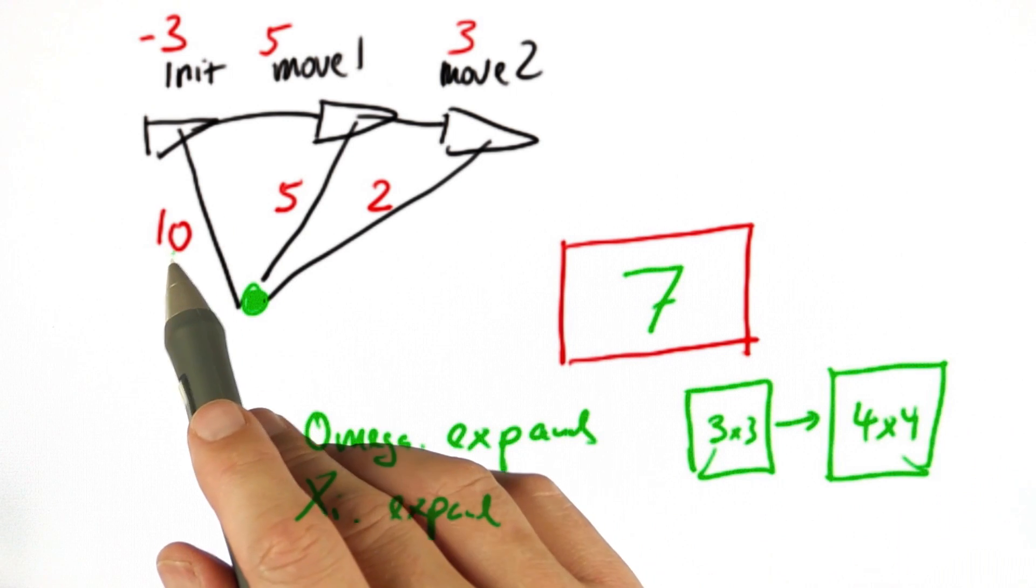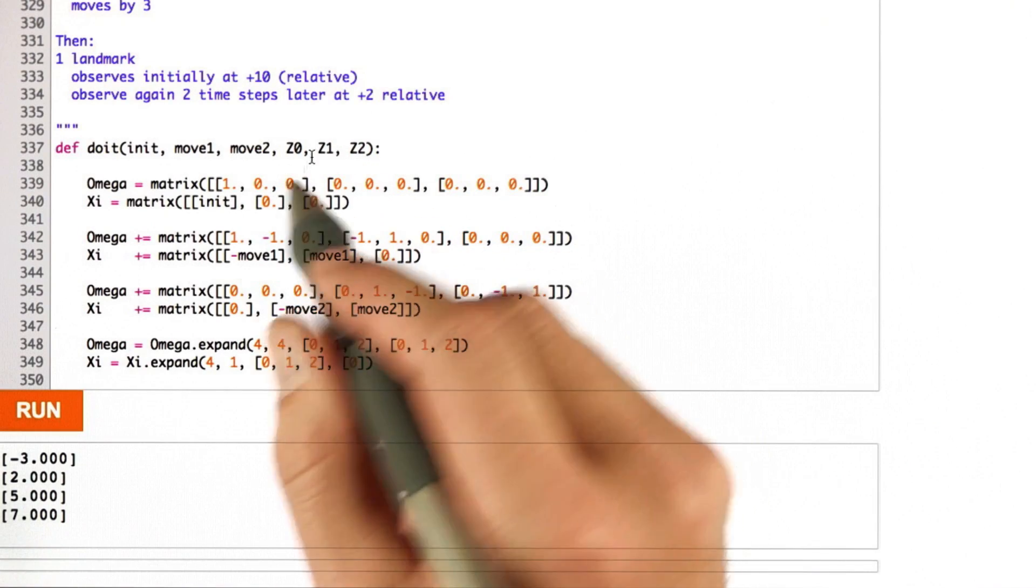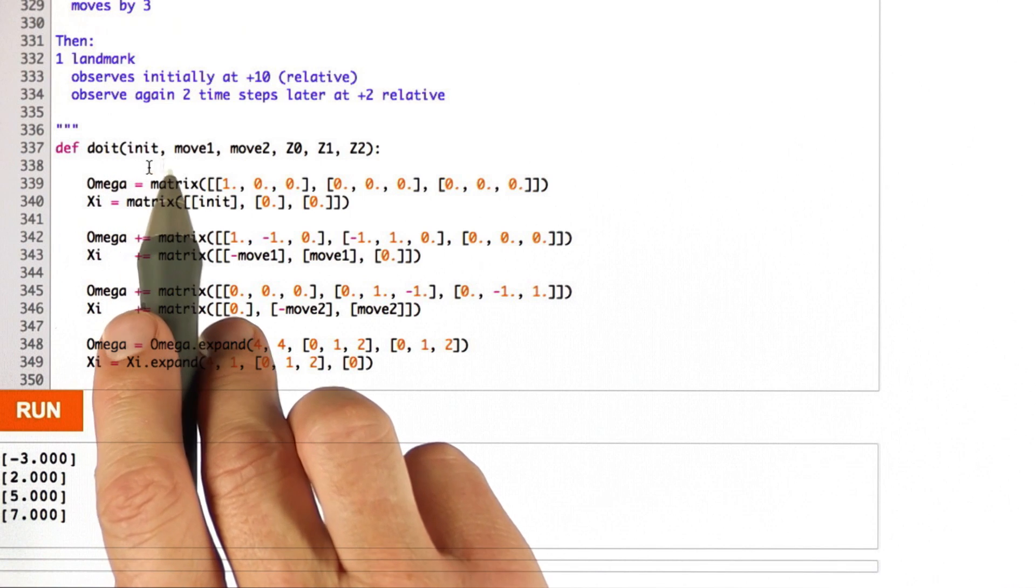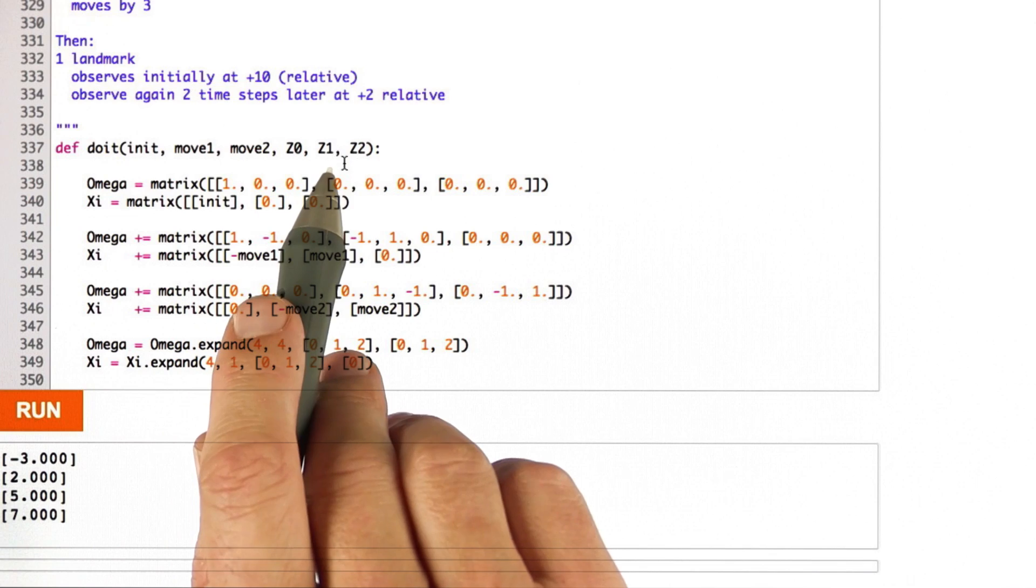Now I have additional input parameters of measurement 0, 1, and 2. So in particular, here is our new do it routine. It now has its input parameters, my two motion commands, and the three measurements command for the three different poses.